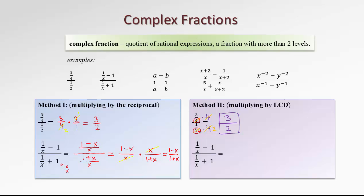Since this was a fairly simple question, we may not see a big advantage of the LCD method over multiplying by the reciprocal. But for larger questions — let's look at the second one — you will see that the LCD method works faster and easier. We're going to multiply the big numerator and the big denominator by the LCD of those small denominators, which in this case is just x. So we multiply the big numerator, put it in a bracket, by x, and the big denominator by x.